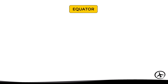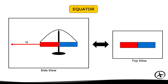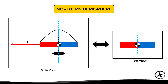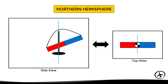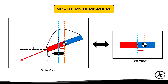At the equator, the compass magnet is completely balanced since there is no magnetic dip, meaning the center of gravity is aligned with the pivot point. However, in the northern hemisphere, the magnet tilts due to the magnetic dip effect, and the center of gravity is no longer aligned with the pivot point. From a top-down view, it appears as if the center of gravity of the magnet shifts to one side.